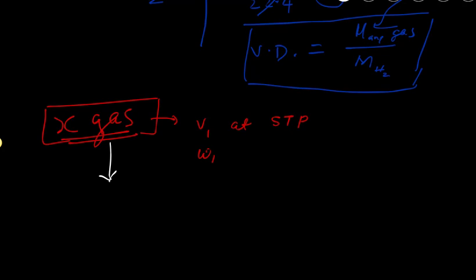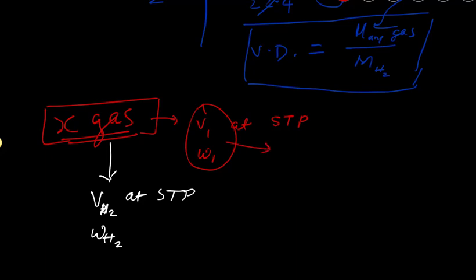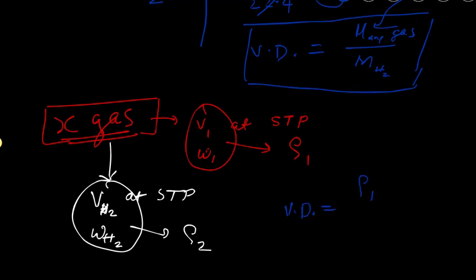If you're doing this regularly, you already know the volume and mass of hydrogen for that specific volume. Weighing the hydrogen gives you density₂ and weighing the unknown gas gives you density₁. You then simply compute the vapor density as ρ₁ / ρ₂.